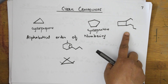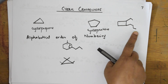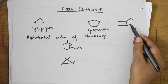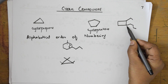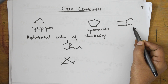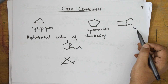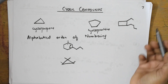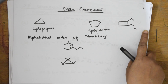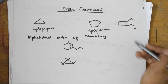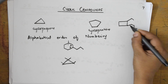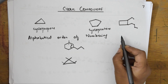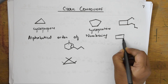When numbering a cyclic compound with substituents, first count the carbons in the ring. Here we have one, two, three, four — so there are four carbons in the ring, plus substituents at various positions. Count all the attachment points carefully.